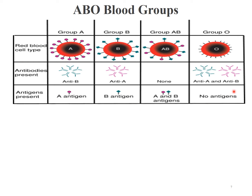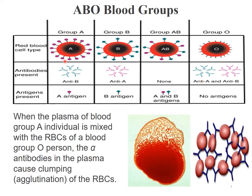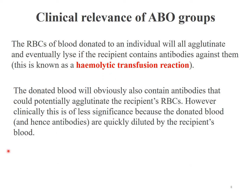Going back to the case discussed at the start of this lecture: the lady had blood group O but was transfused with blood group A. She had antibodies against both blood group A and B. The newly transfused blood group A cells were clamped together by these antibodies, followed by hemolysis or breakdown of the red blood cells. This condition caused by incompatible blood transfusion is known as hemolytic transfusion reaction, most often the result of procedural or human error. The donated blood may also contain antibodies that can agglutinate the recipient's red blood cells, but this is less significant because the donated blood is quickly diluted by the recipient's much larger blood volume.